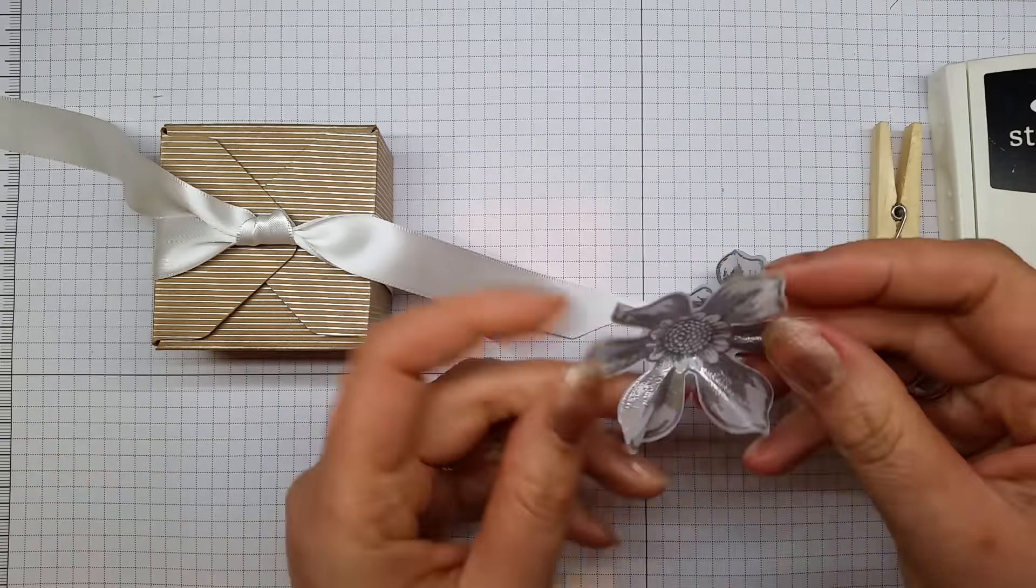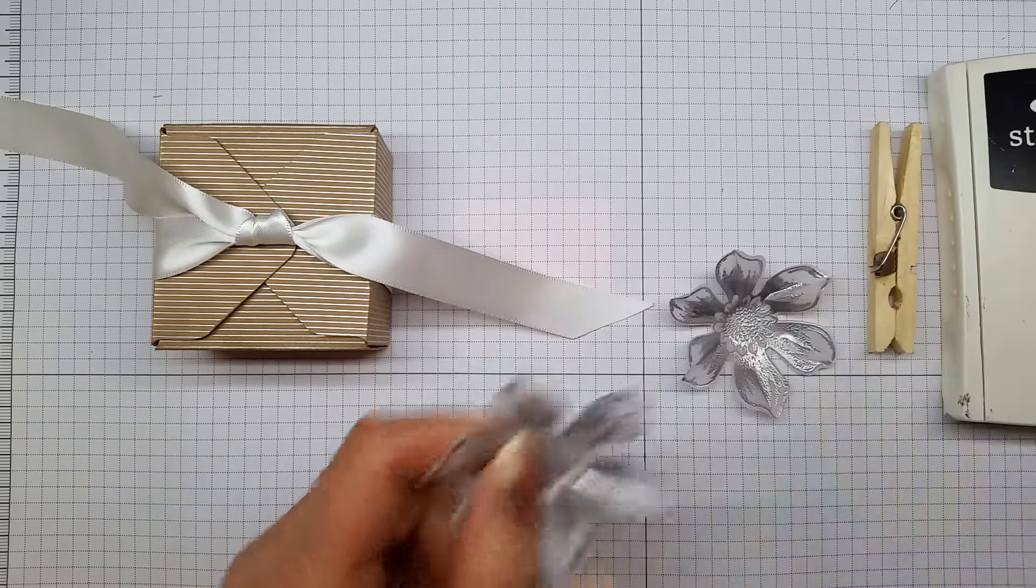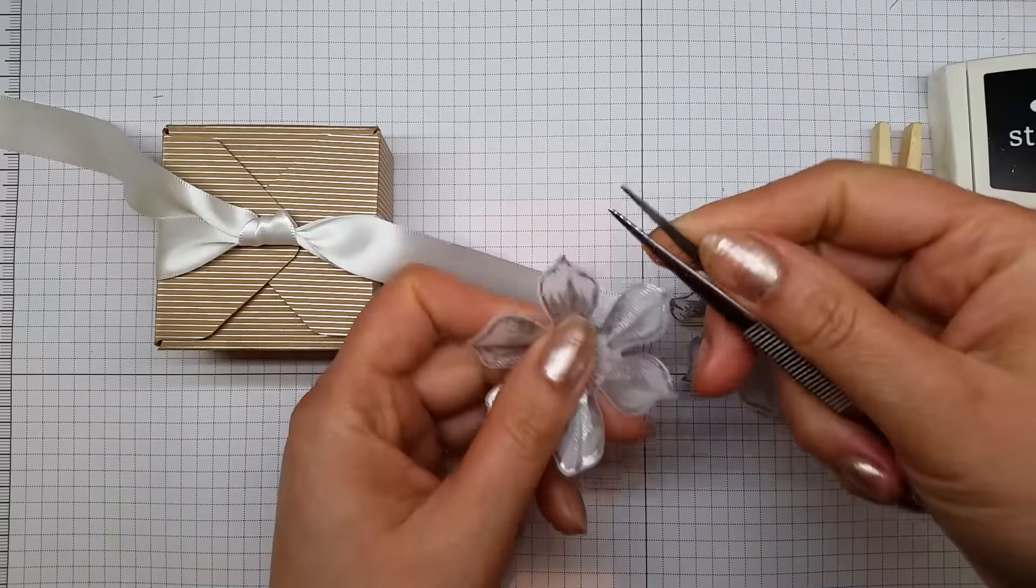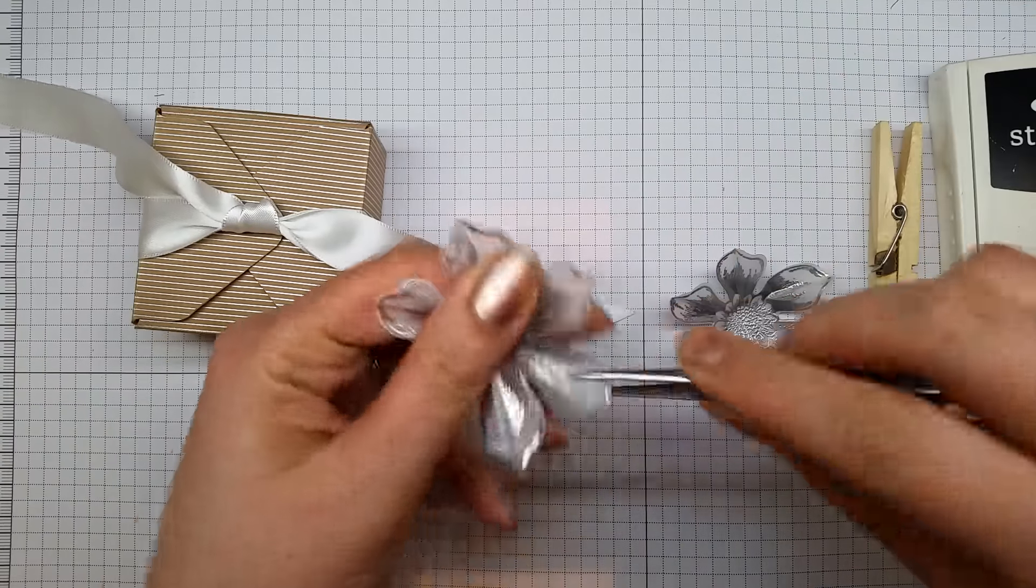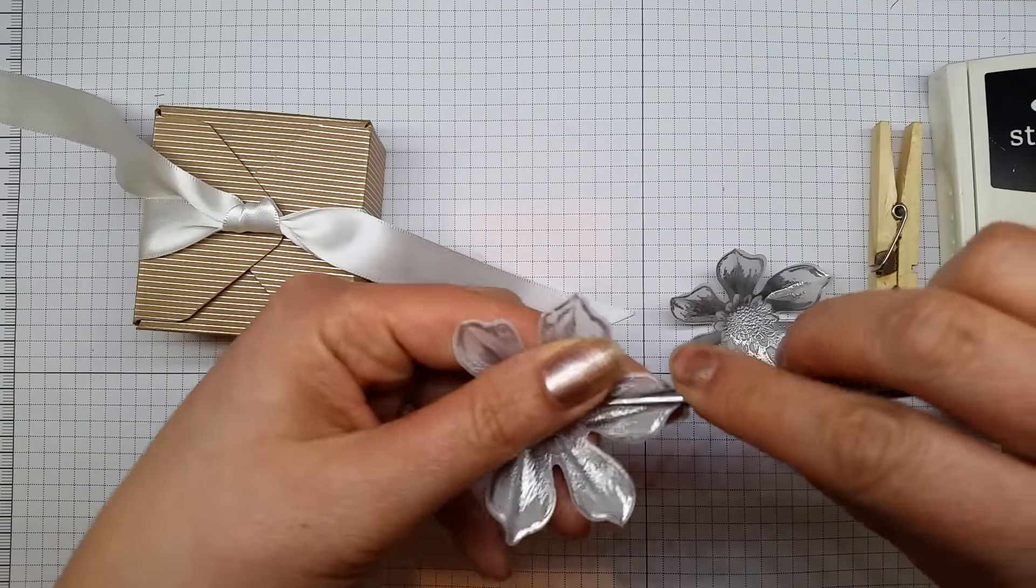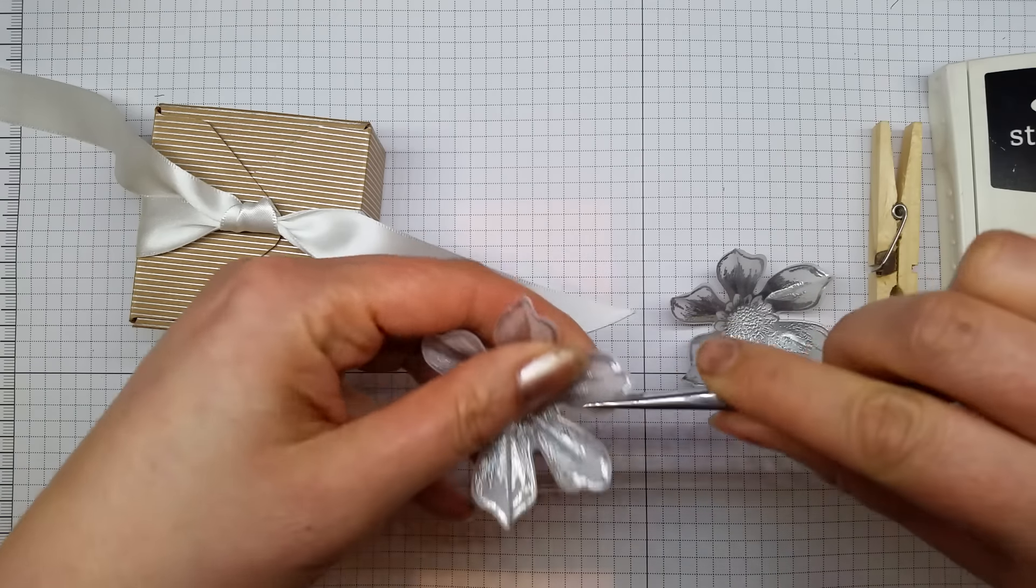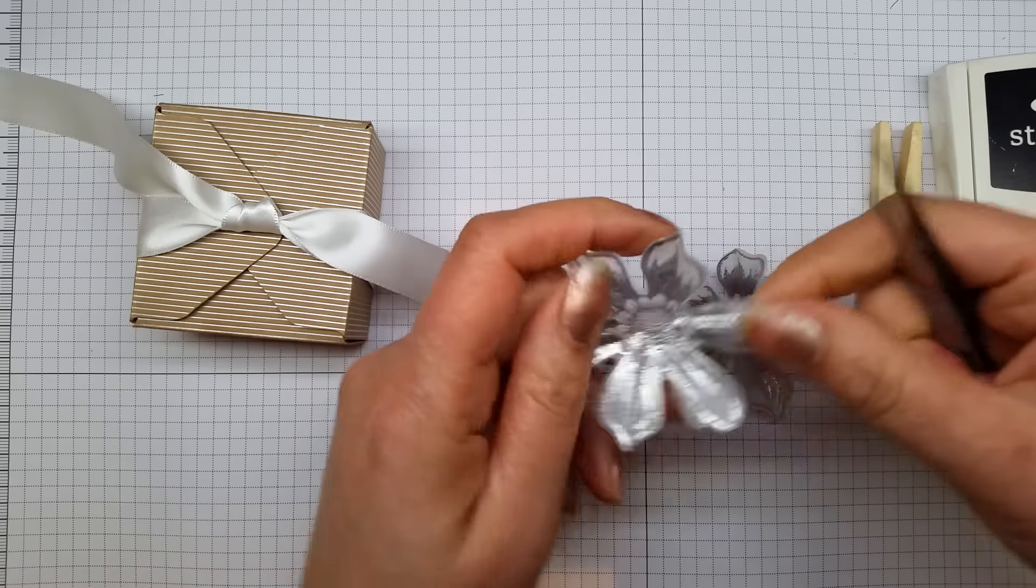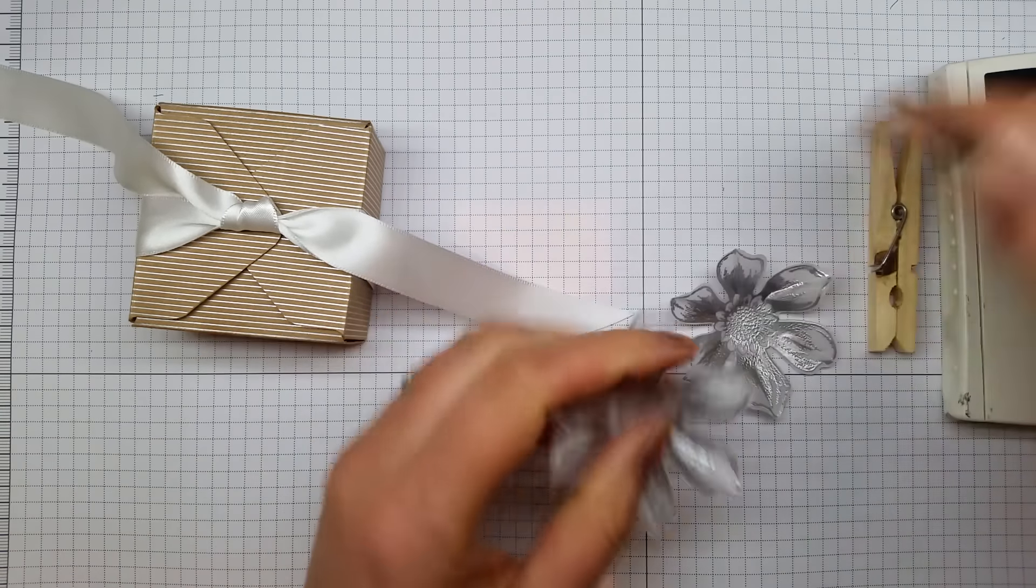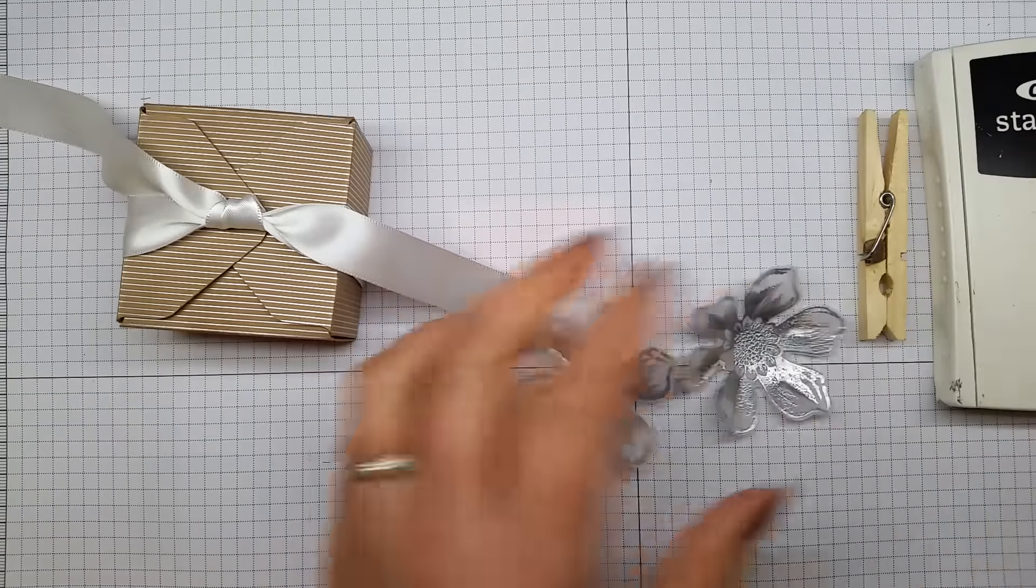I've used the vellum cardstock for this, and it gives a really nice finish. Then I've taken my trusty old tweezers and I've shaped all the petals. If you want to see some other videos of me doing paper flowers, then please have a look at Artful Stamping on YouTube.